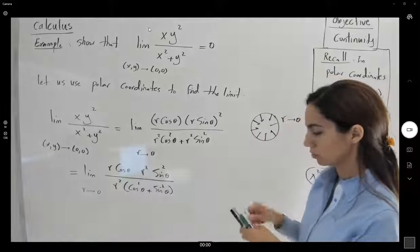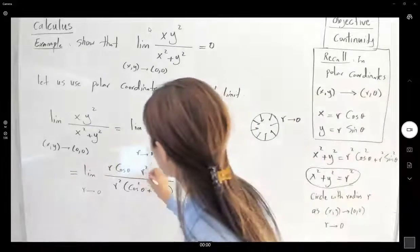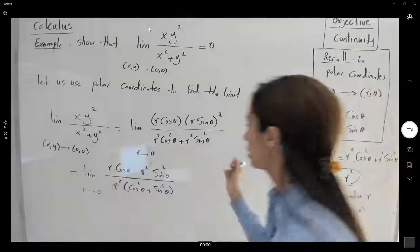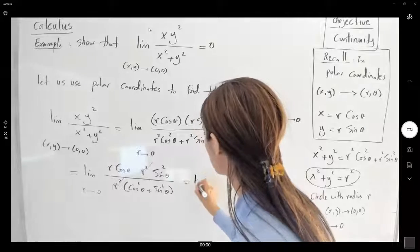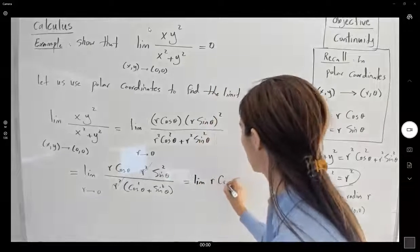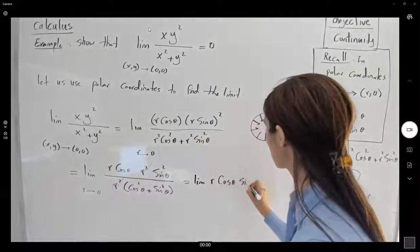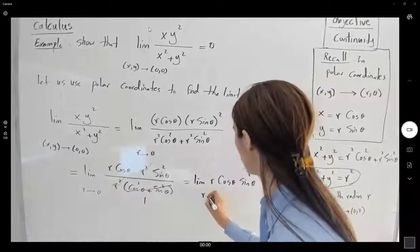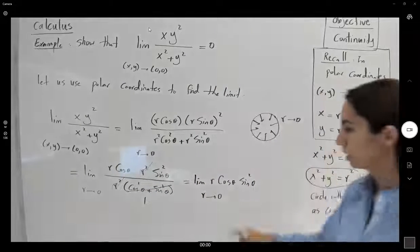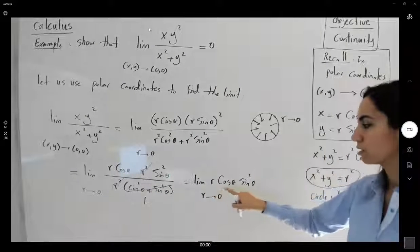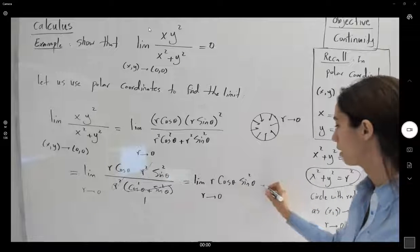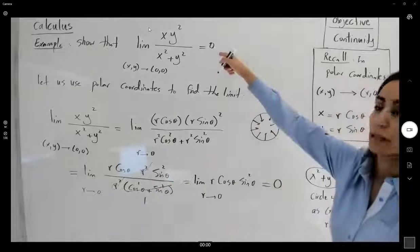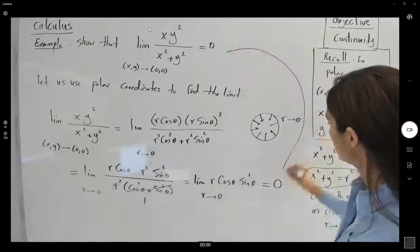On the numerator and denominator, we cancel r² with r², leaving the limit of r cosine θ · sin²θ as r goes to zero. This equals zero times cosine θ times sin²θ, which is zero. So we've shown that the limit equals zero using polar coordinates.